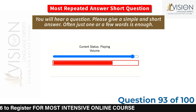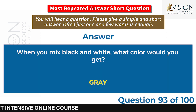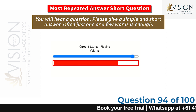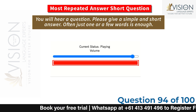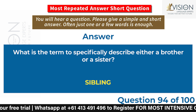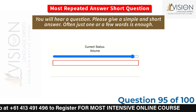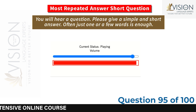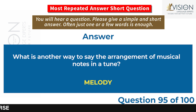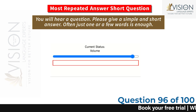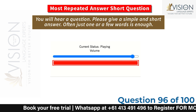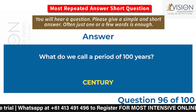When you mix black and white, what color would you get? Gray. What is the term to specifically describe either a brother or a sister? Sibling. What is another way to say the arrangement of musical notes in a tune? Melody. What do we call a period of one hundred years? Century.